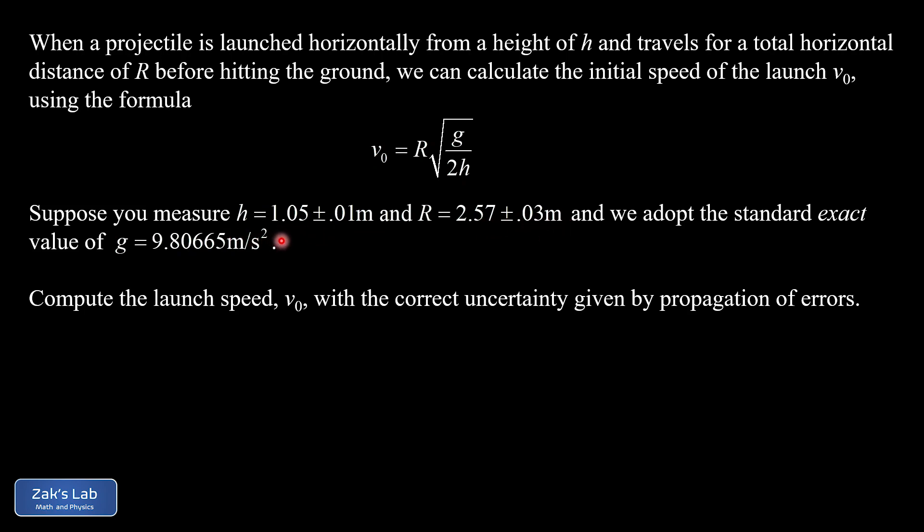We're also told, just for the sake of simplifying things, that we're going to adopt an exact value of g. Now, in reality, g varies a little bit all over the surface of the Earth, but there is a standard exact value that people use of 9.80665 meters per second squared. And because we're calling that exact, there's no plus or minus on it, and it simplifies our calculations a little bit.